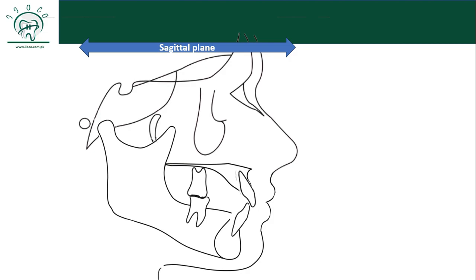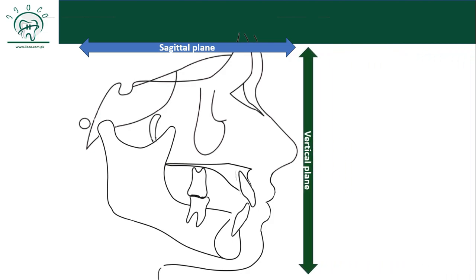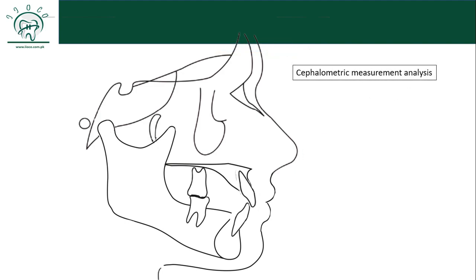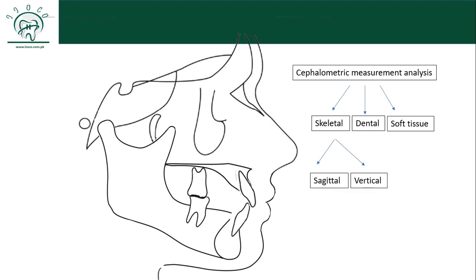We can evaluate two planes on a lateral cephalometric radiograph: one is the sagittal plane or anteroposterior plane, and another is the vertical plane. What do we actually see and trace in the radiograph? We evaluate skeletal structures, dental structures, and soft tissues. We have divided cephalometric measurement analysis into three main components — skeletal, dental, and soft tissues. When evaluating skeletal structures, we analyze in both the sagittal and vertical planes.